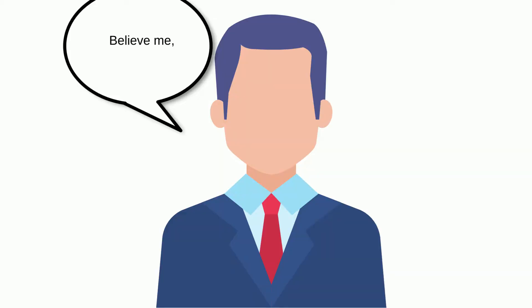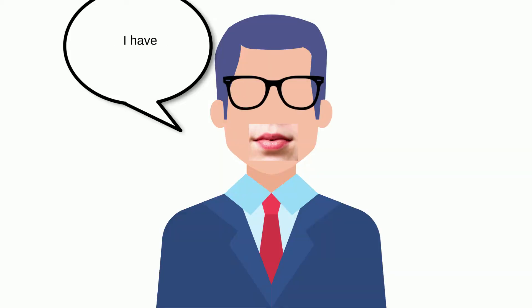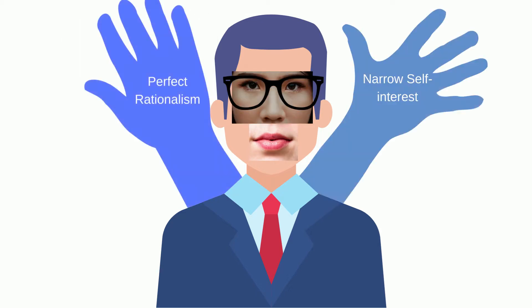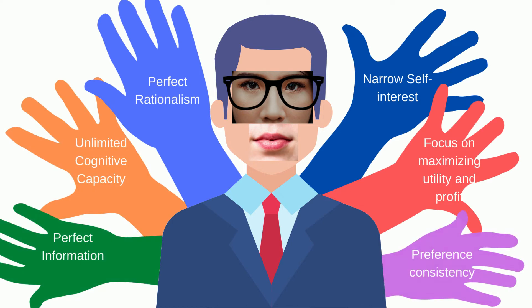Homo economicus, which has been discussed by both economists and psychologists at different times, has certain characteristics. These are briefly: perfect rationalism, unlimited cognitive capacity, perfect information, narrow self-interest, focus on maximizing utility and profit, and preference consistency.